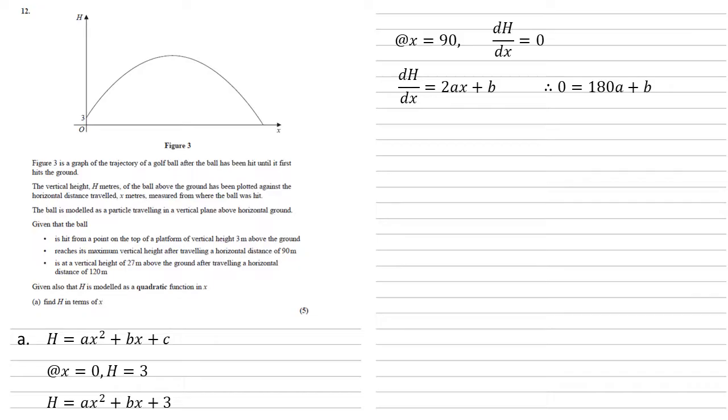Our third bullet point is the vertical height of 27 metres when the horizontal distance is 120, so at x equals 120, h equals 27. Bringing this into our equation, it gives us 27 equals 14,400a plus 120b plus 3. We can rearrange to get 14,400a plus 120b equals 24. A quick bit of inspection, all of those terms are divisible by 24, so let's do that just to make things a bit easier. So 600a plus 5b equals 1.